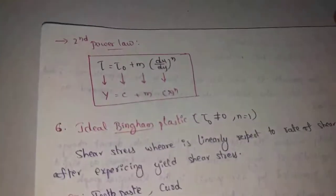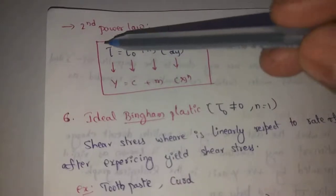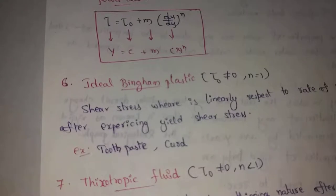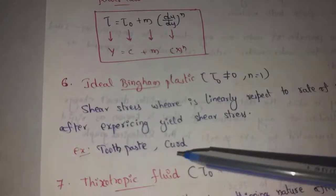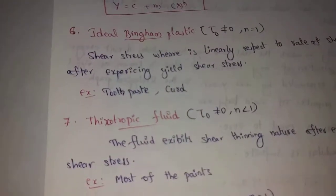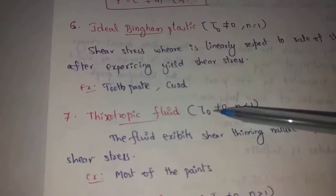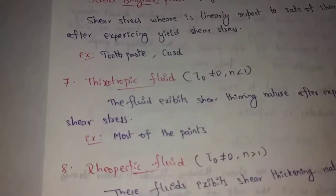Second form: tau equal to tau0 plus m into du by dy whole power n. Ideal Bingham Plastic: tau0 is not equal to zero, yield shear stress is not zero, and flow characteristics index n is equal to 1. Examples are toothpaste and curd. Thixotropic fluids: yield shear stress is not zero, flow characteristics index n is equal to 1. Most paints are thixotropic fluids.